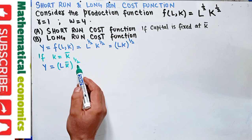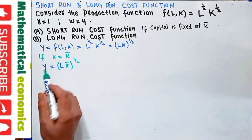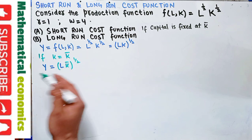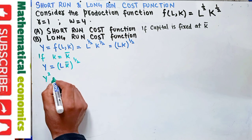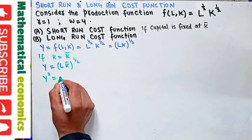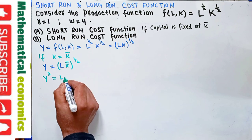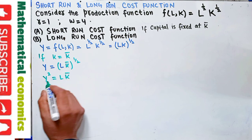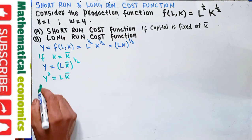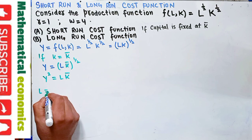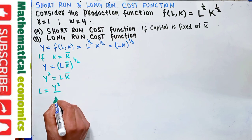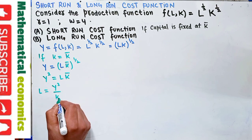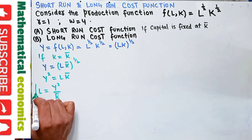Transposing the exponent, we square both sides to get y² = L × K̄. Solving for labor: L = y² / K̄. So the units of labor employed is a function of the output to be produced.